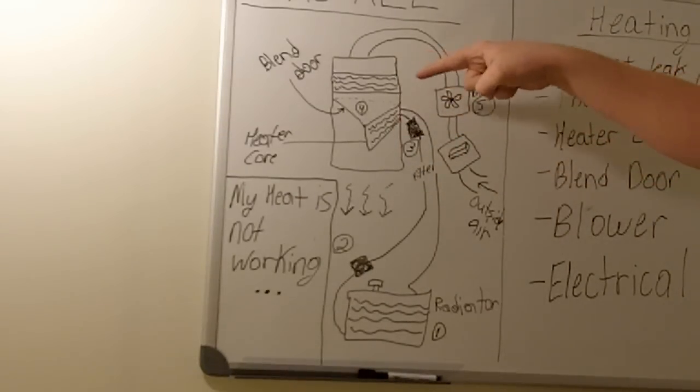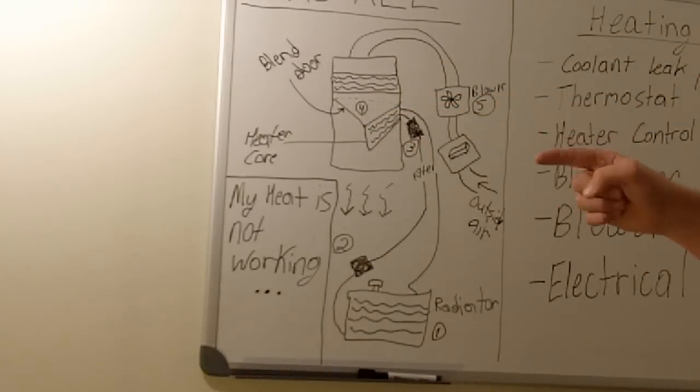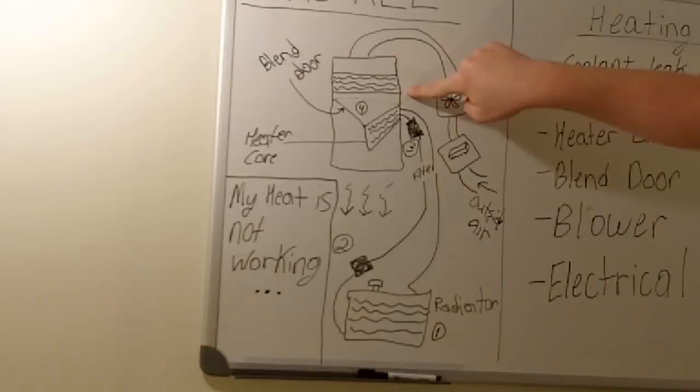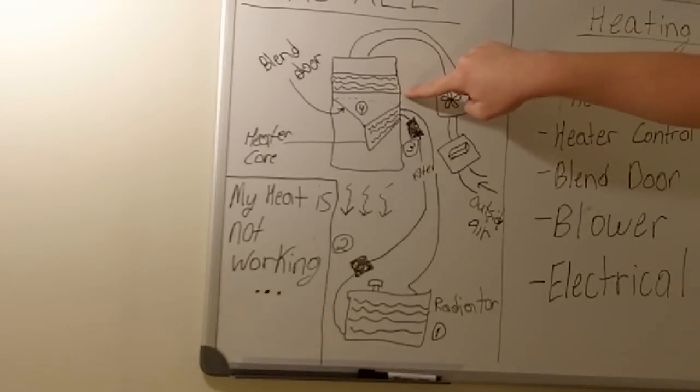That's why when you have fogged windows and you push defog, on some cars you'll see your little AC light turn on. That's because this is actually going to turn on because when you blow moist air over cold, the moisture will leave the air, and that's where you get the water dripping from your evaporator. So a fully working evaporator isn't going to be a problem.